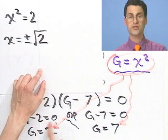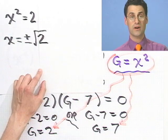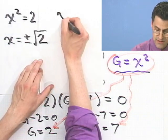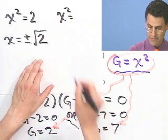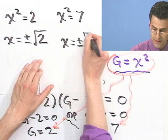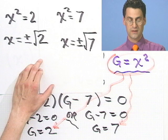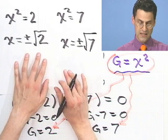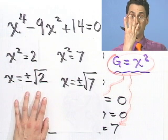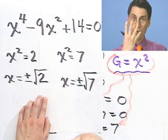So in fact, this one solution for g gives me two solutions for x. And what's the other possibility? The other possibility is that x squared equals 7, which means x equals plus or minus the square root of 7. So in fact, to this equation that is a fourth degree equation, notice we have four different solutions.